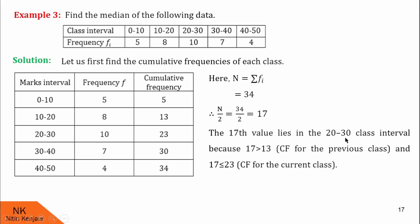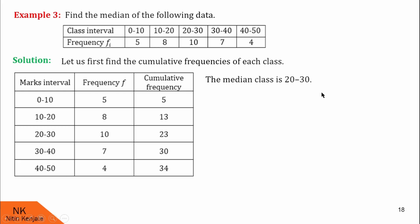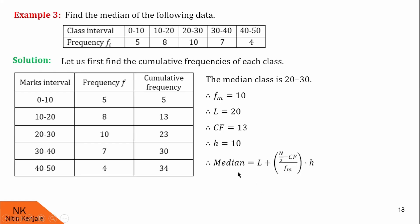So the corresponding median class is 20 to 30, where the lower limit is 20 and the upper limit is 30. The frequency of the median class, fm, is 10. L, the lower limit of the median class, is 20. CF, the cumulative frequency of the previous class, is 13. H, the class width, is 10. Now we proceed with the median formula: l plus n by 2 minus cf upon fm into h. We have L = 20, n = 34, H = 10, FM = 10, and CF = 13. Let us substitute all these values and calculate the median.